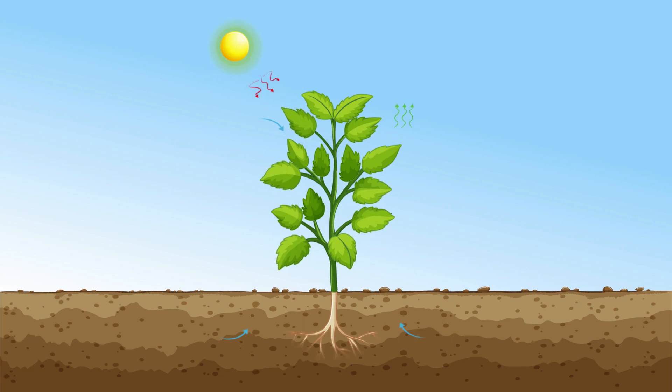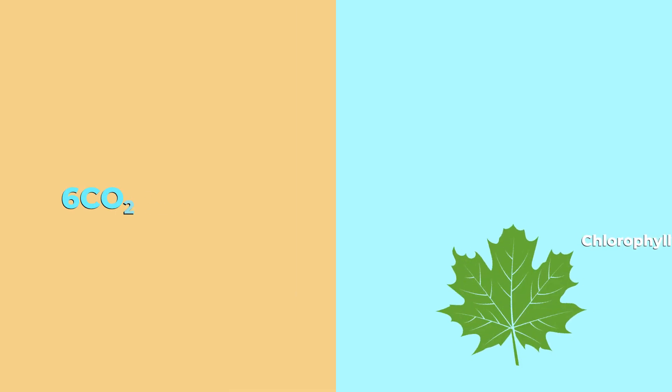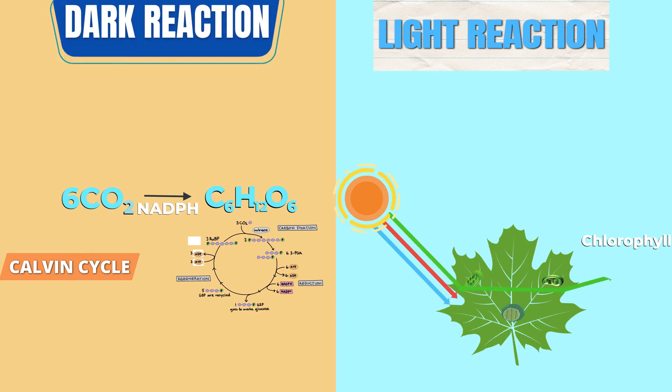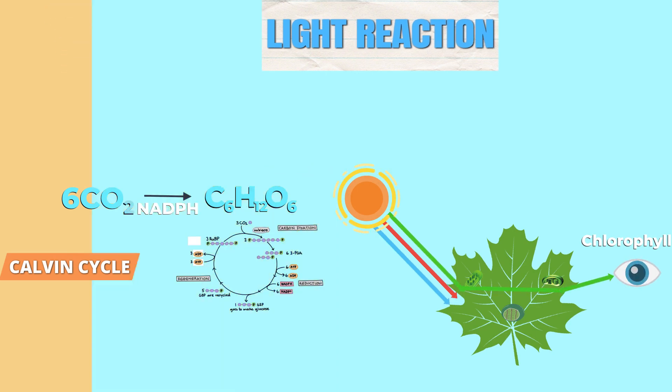So how does photosynthesis actually happen? Photosynthesis takes place in two parts that occur simultaneously within the chloroplast, known as a light reaction and a dark reaction.